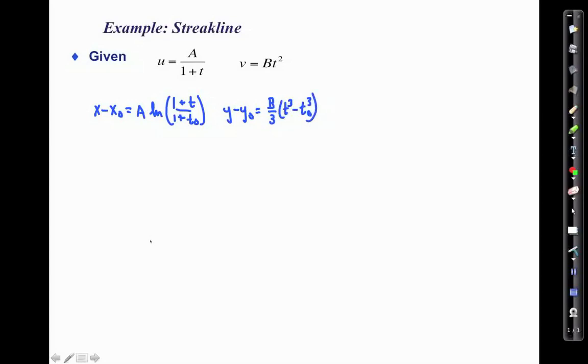If we want to calculate the streak line, then what I would have to do is pick different t_naughts to simulate different release times. So I'd have to calculate x1, y1 for t_naught equals t1, and I'd have x2, y2 for t_naught equals t2. That would be a marker element that was released from x_naught, y_naught at a different time. This would get then, allow me to draw a curve connecting all those points together. Very tedious to do, but if you're using a program like MATLAB it would probably be the most practical way to do it.